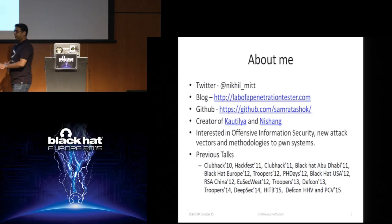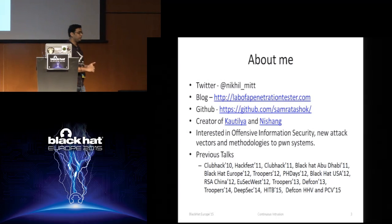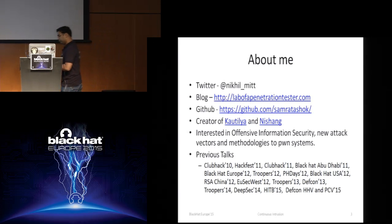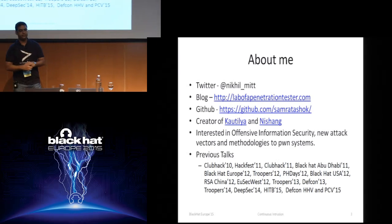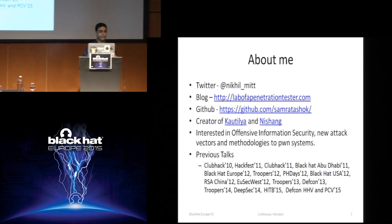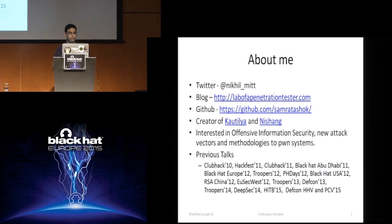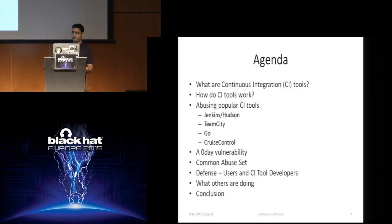A couple of things about me: I'm on Twitter, so follow me. I blog on labofapenetrationtester.com. I'm the creator of Cotillia and Nishang. Cotillia is a tool to ease usage of human interface devices in penetration tests. Nishang is a tool for using PowerShell in pen testing and offensive security. Both tools are available on my GitHub account, and I've been a frequent speaker for the past few years at different conferences.